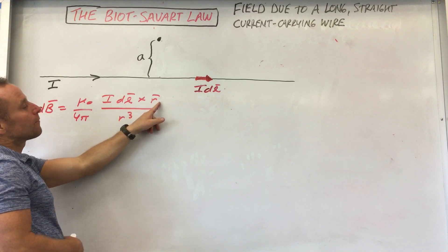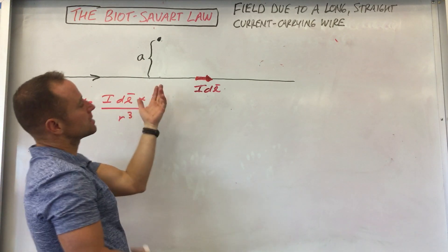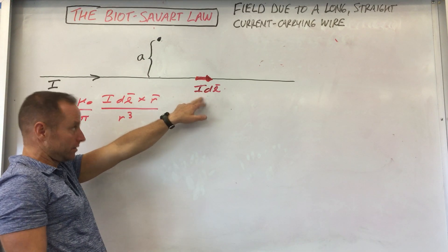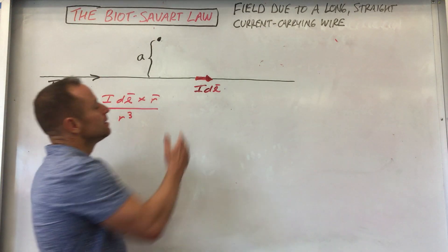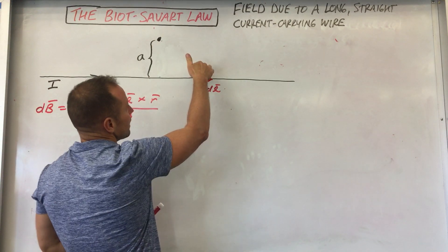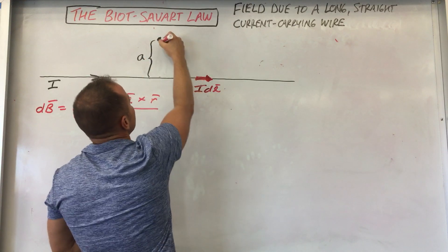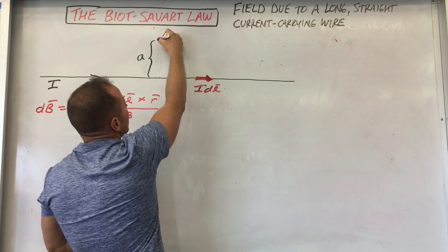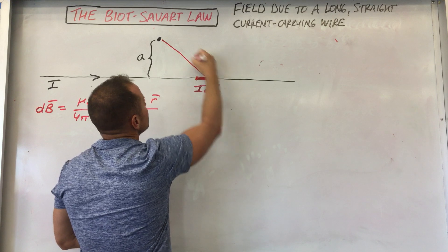R vector always goes from the cause to the effect. So the cause of the field are these Idls and then the field itself is the effect. So here's the cause and the vector from the cause to the effect is the R vector. So I'm going to draw it that way. There's the R vector.